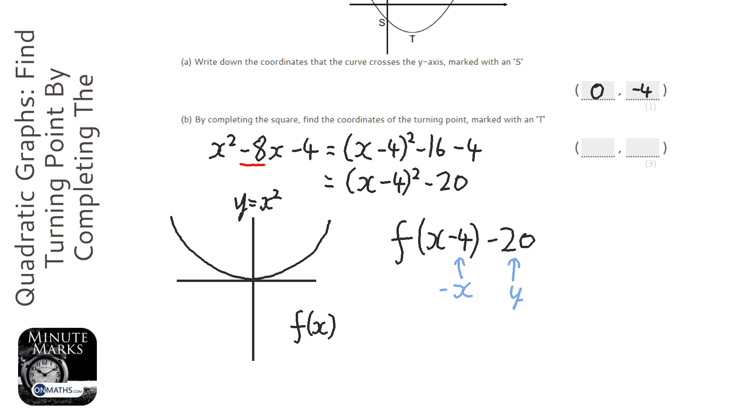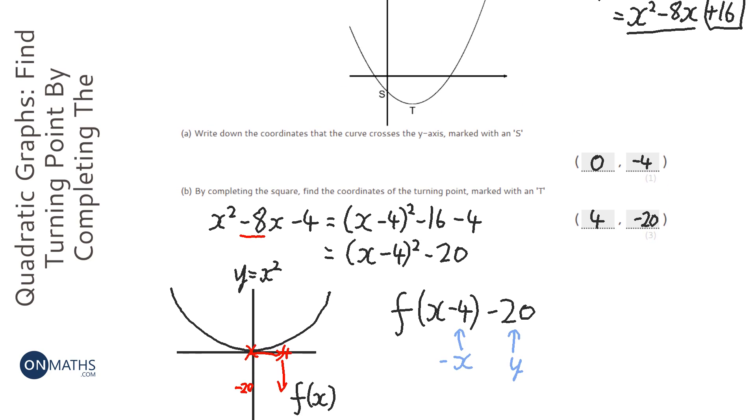So the minimum point on y equals x squared is 0, 0, and we're moving to the right 4, and then we're moving down 20. So it would be minus 20. So the new point will be at 4 minus 20, and that's going to be the point at t.